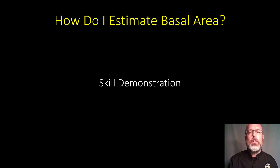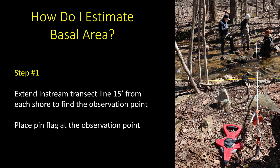The first step: if you're doing stream restoration, you're probably out there doing transects anyway — either to do cross sections or to do pebble counts. Use one of those transects, but extend the transect line about 15 feet from the shoreline and set an observation point. Just put a pin flag there.